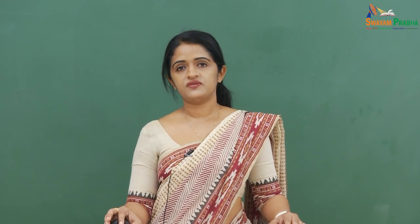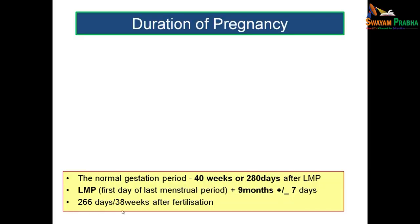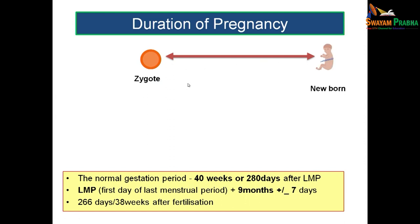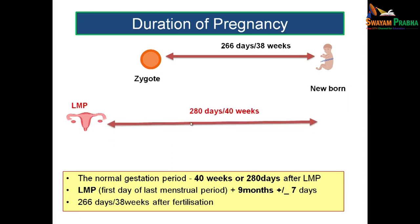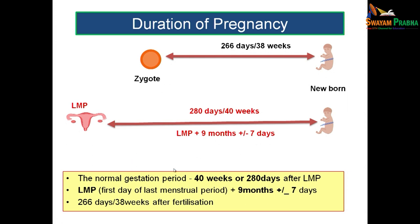If we know the first day of the last menstrual period, add 9 months plus or minus 7 days to get the expected date of confinement. The intrauterine life after fertilization is 266 days or 38 weeks. If calculating from the first day of the last menstrual period to birth, it is 280 days or 40 weeks — that is 2 weeks more than the fertilization-based calculation.